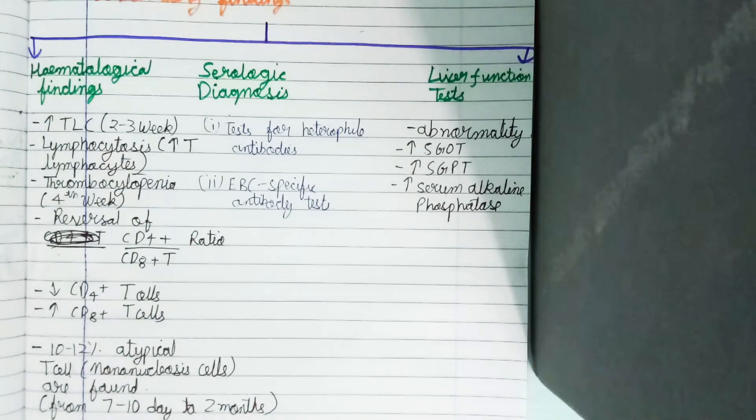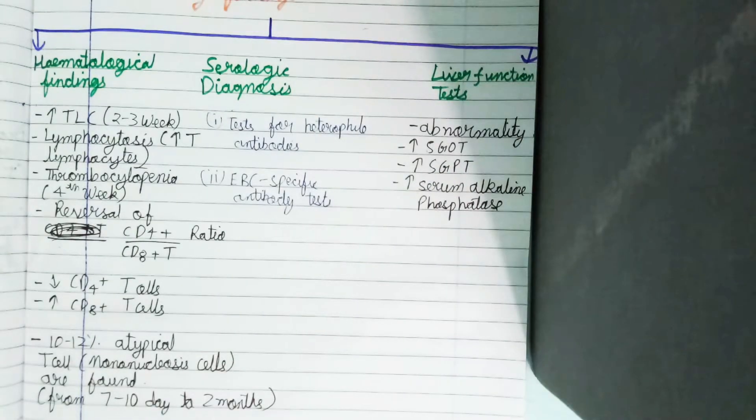Now we come to the EBV-specific test—Epstein-Barr virus-specific test. Specific antibodies against the viral capsid and nucleus of EBV can be demonstrated in patients who are negative for heterophile antibody test.